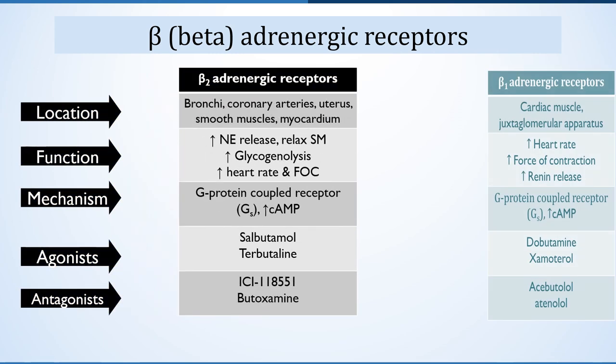Beta-2 receptors are located on bronchi, coronary arteries, uterus, smooth muscle and myocardium, where they increase noradrenaline release, relax smooth muscle, promote glycogenolysis and increase heart rate and force of contraction. The mechanism is the same as beta-1 adrenergic receptors, increasing cyclic AMP via G-protein coupled receptors. The agonists and antagonists are shown here.